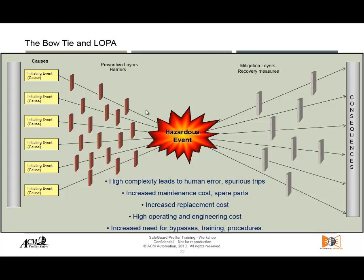False trips means stopping your plant unnecessarily because the system is too sensitive or too complex — the equipment is not interacting properly, so it stops all the time trying to be very safe. We need to simplify the system with respect to the amount of safeguards. If you have too many safeguards, you have to maintain all of them and make sure they are working in the right order. So how do we know if we really need them?